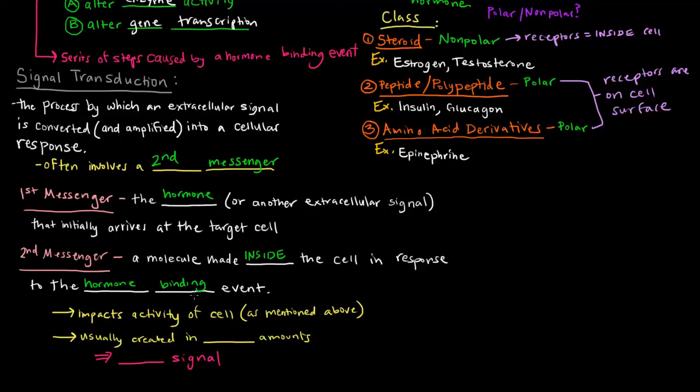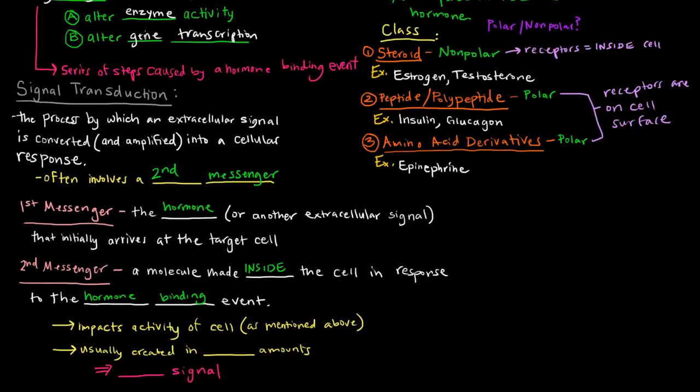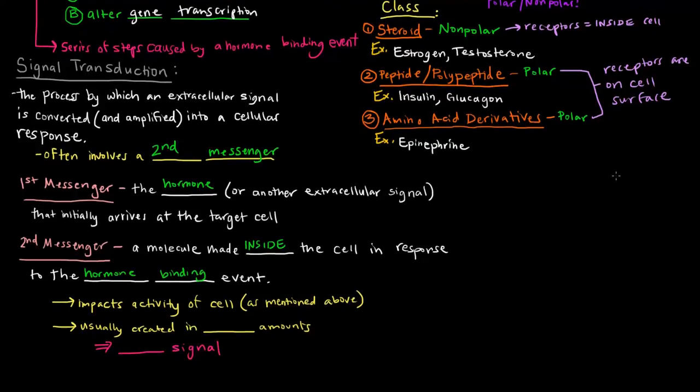Now why is that significant? Usually these second messengers have some sort of impact on the activity of the cell. As far as what we mentioned earlier, they could alter enzyme activity or alter gene expression. Now they're usually created in high or large amounts, and that's significant. The reason why is because we think about the second messengers being created after one hormone binding event.